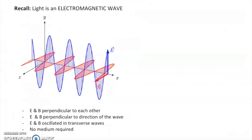I'd like to remind you about an electromagnetic wave. Electromagnetic waves are really just a fancy way of saying light waves — all light waves are electromagnetic waves. The electric field and the magnetic field are always perpendicular to each other, and both fields are perpendicular to the direction of the wave itself, sometimes called the direction of propagation. The electric field follows a transverse wave, as does the magnetic field, and for this reason no medium is required, which means light can travel through outer space.